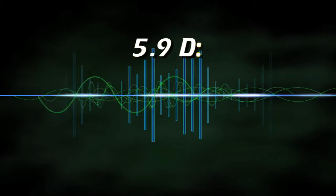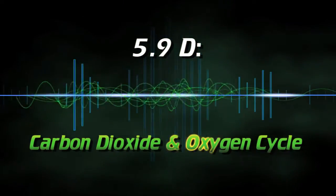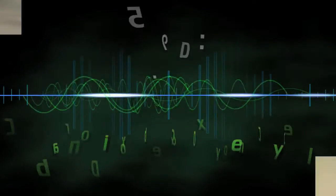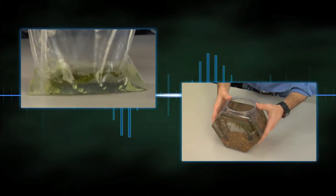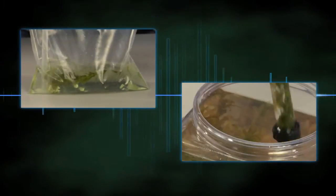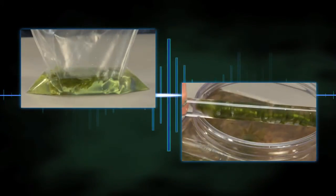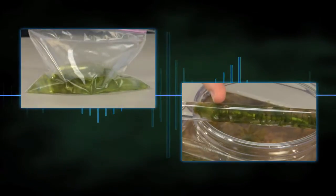5.9 D. Carbon Dioxide and Oxygen Cycle. In this activity, students observe the production and collection of gas bubbles given off by photosynthesizing aquarium plants.